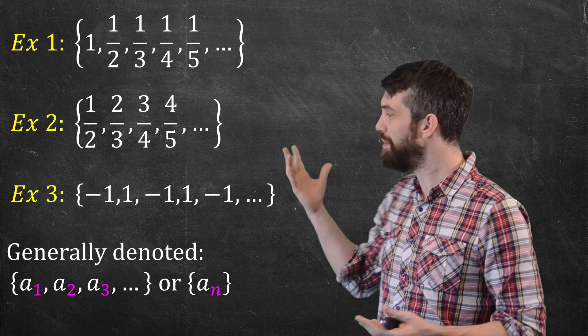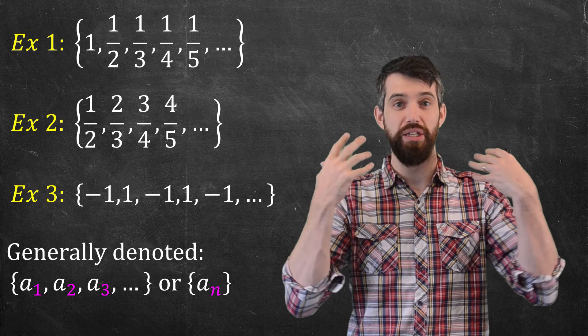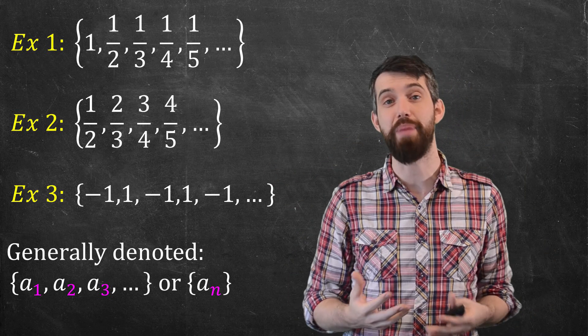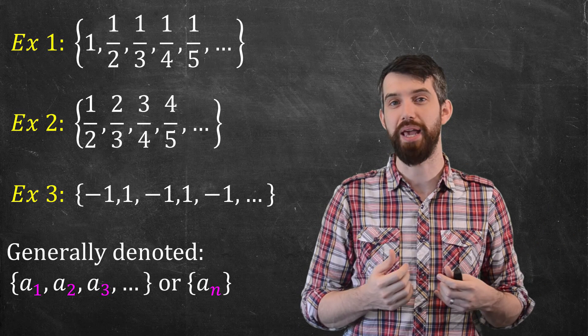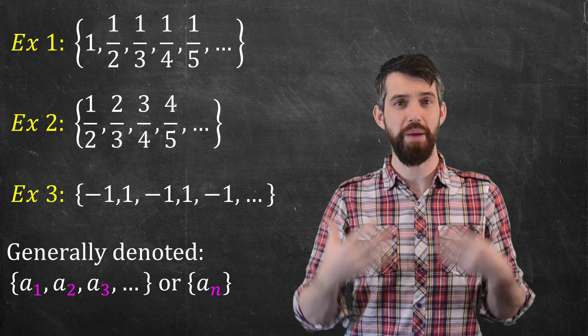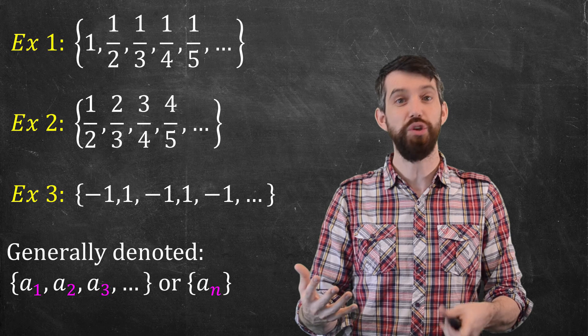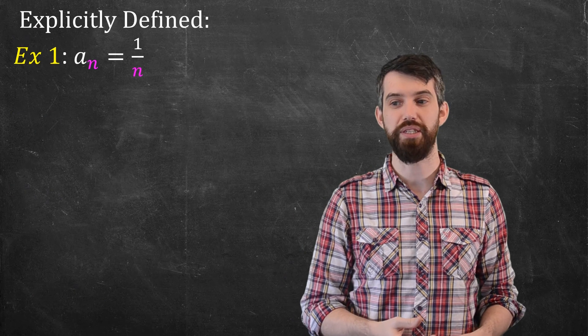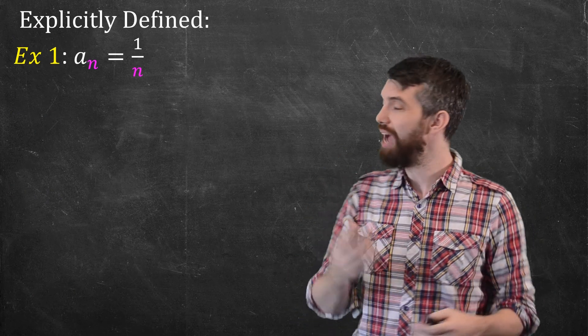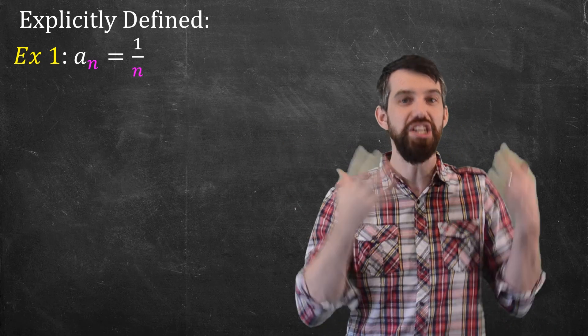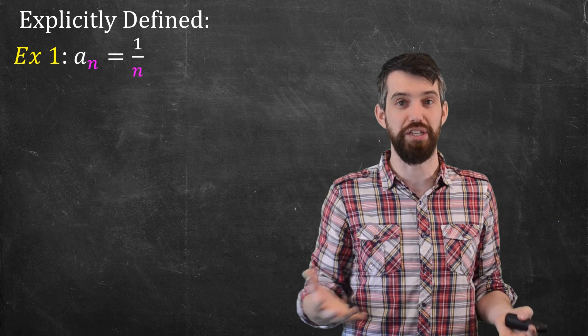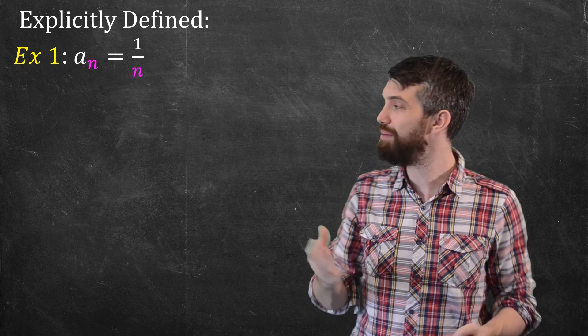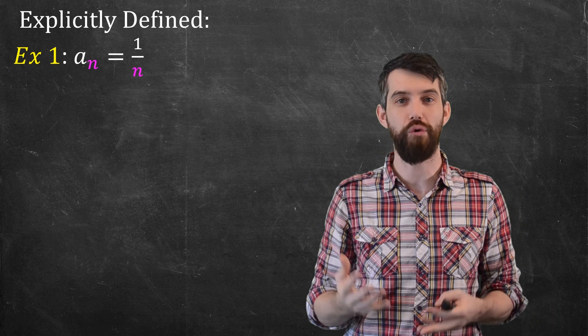Now, what we've done here is pretty good, where I've just listed the elements, and maybe you can see a pattern, maybe you can't, depending on how complicated it is. But often we want to be a bit more explicit about that. So the other way that I can represent sequences is so-called explicitly defined, where I say the a_n and I just tell you what the expression is for that. So in this example, I'm saying a_n is just 1 over n.